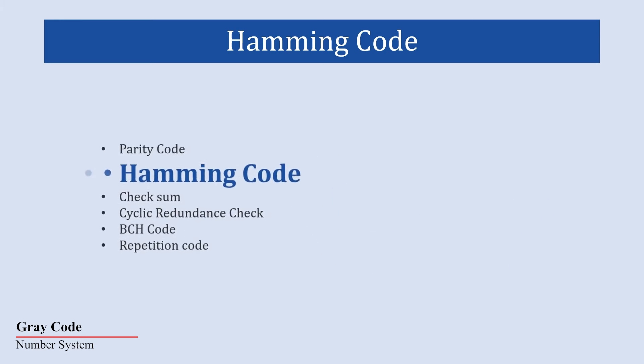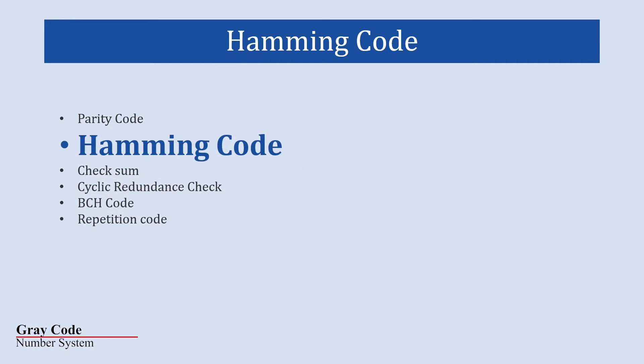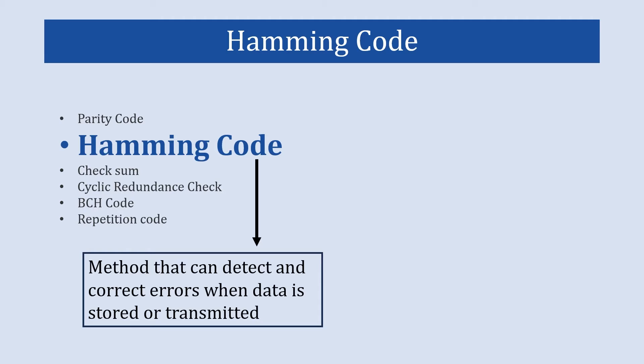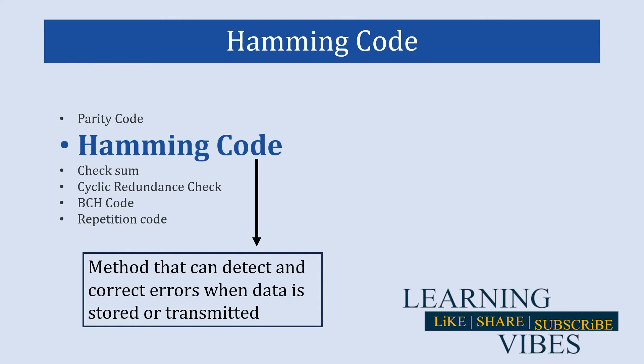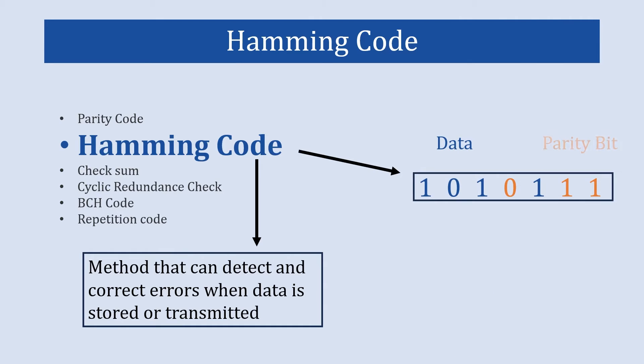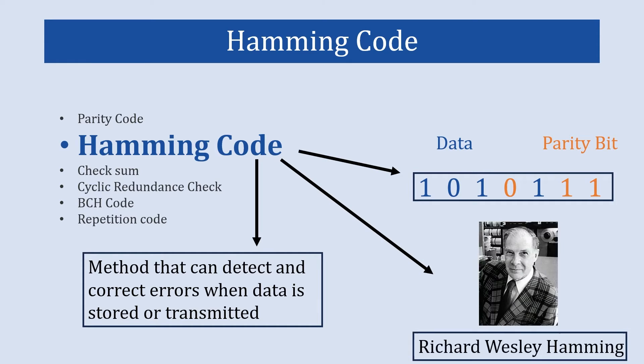Hamming code is a method that can detect and correct errors when data is stored or transmitted. It requires some parity bits to be sent with the data in order to detect errors at the receiving end. Hamming code is named after its inventor Richard Wesley Hamming, who developed this method while working at Bell Labs around the 1950s.